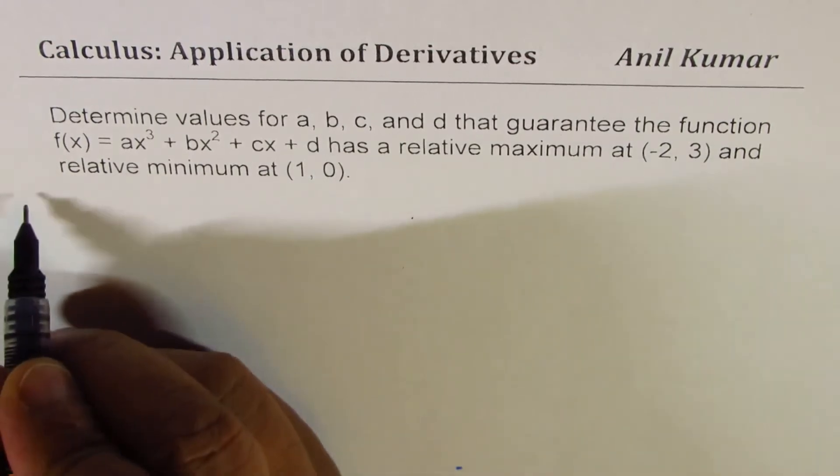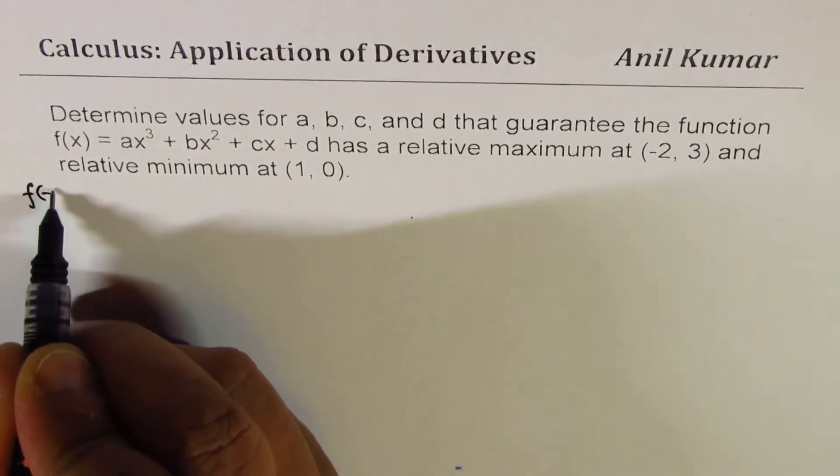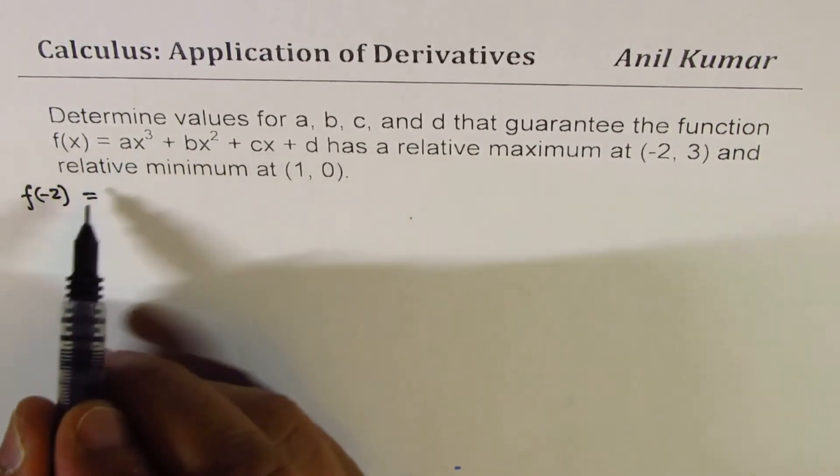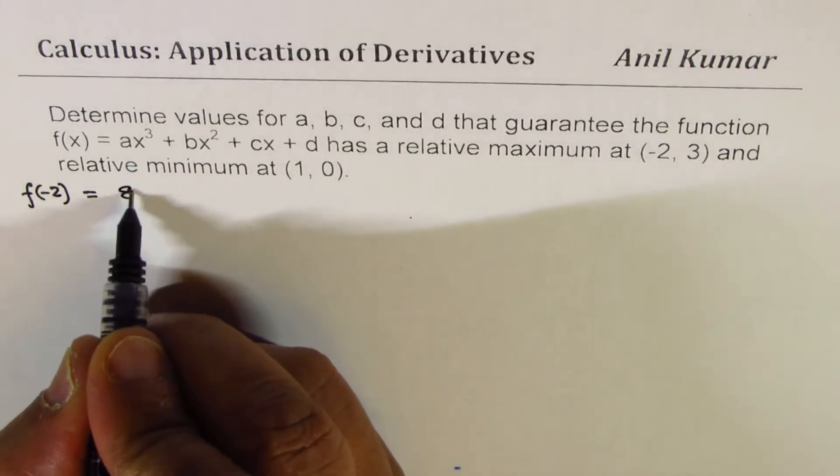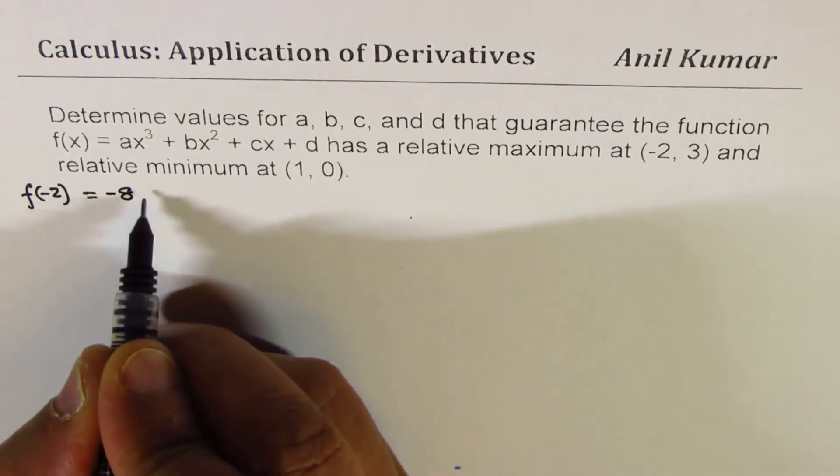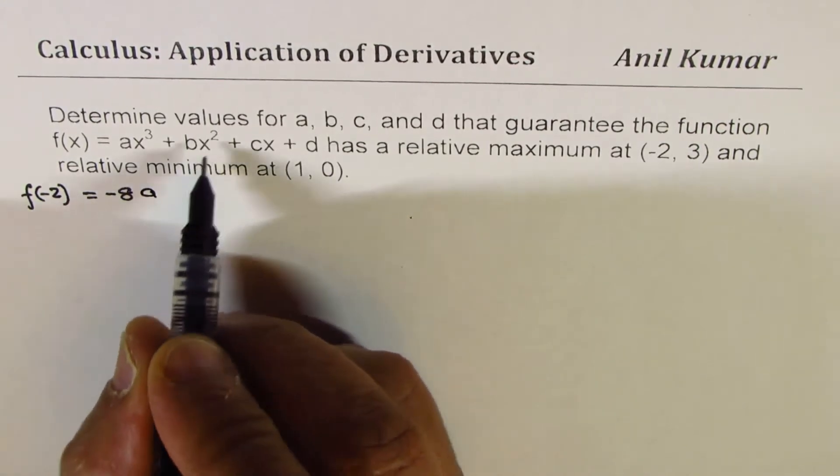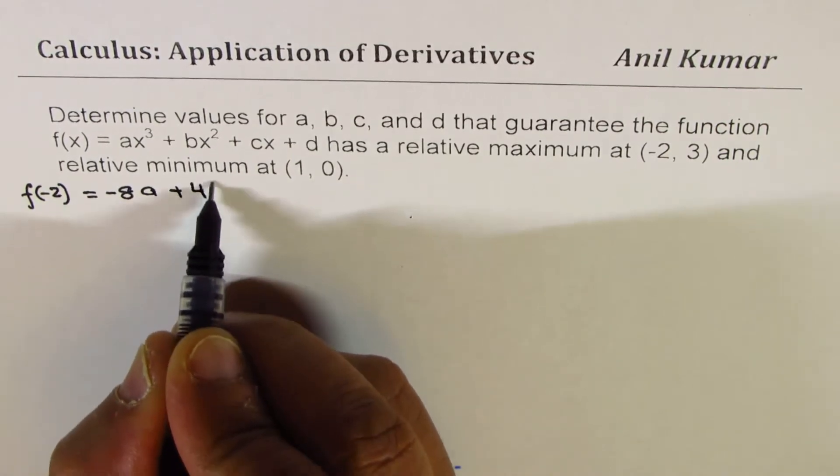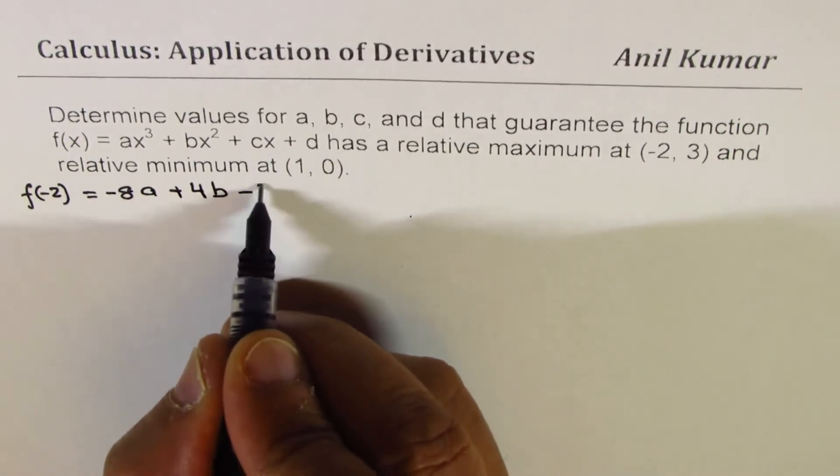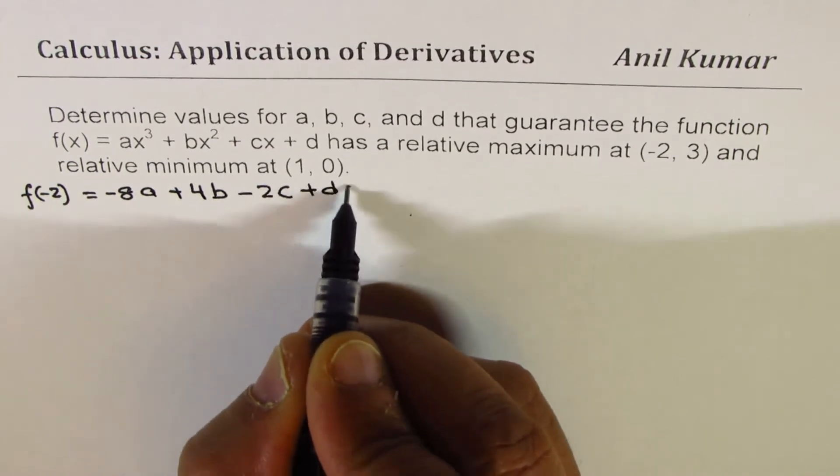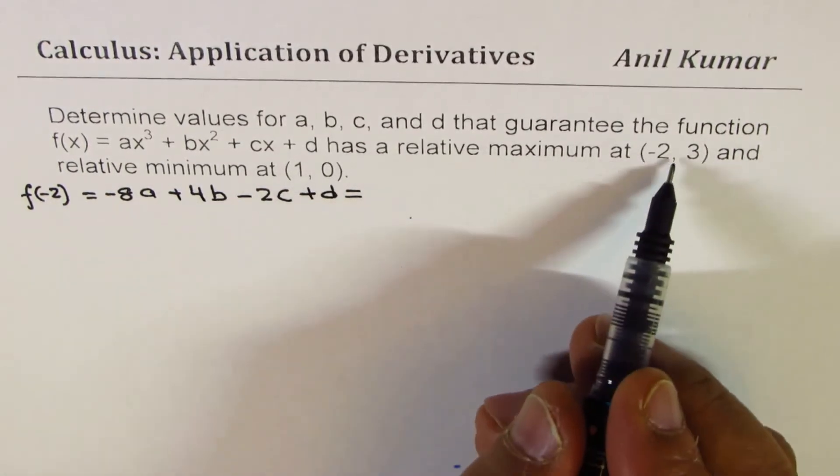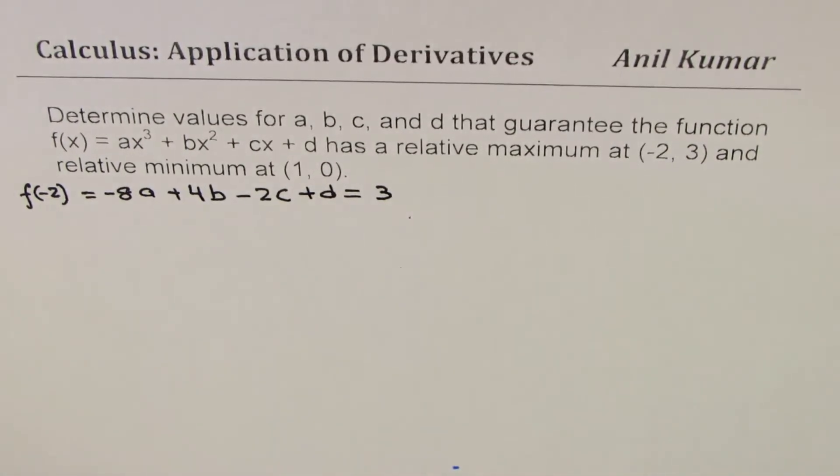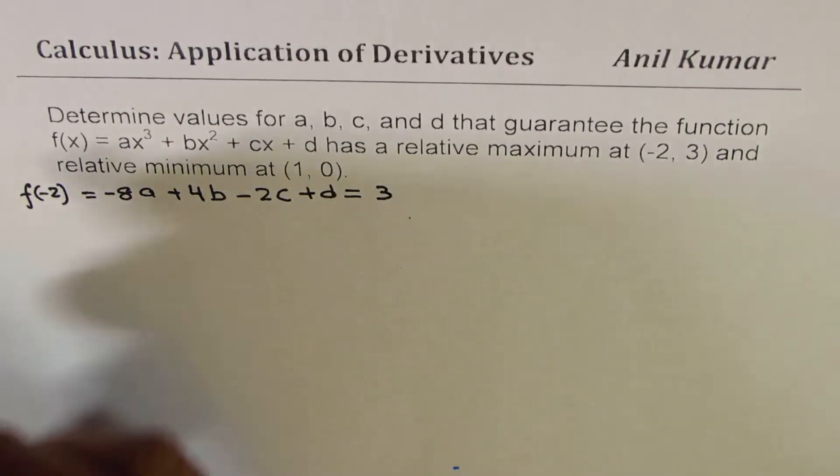So let's write down the equations straight away using these points. When I say f(-2), basically substitute x as -2, so you get -8a + 4b - 2c + d. And this value f(-2) is 3, so it equals 3. I'll call this as my equation number 1.